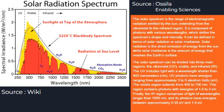The solar spectrum is the range of electromagnetic radiation emitted by the sun, extending from the ultraviolet to the infrared region. It is composed of photons with various wavelengths, which define the spectrum's shape and intensity. Solar radiation is the direct emission of energy from the sun, while solar irradiance is the amount of energy that reaches the Earth's surface. The solar spectrum can be divided into three main regions: the ultraviolet (UV), visible, and infrared (IR). The UV includes light with a wavelength shorter than 400 nanometers, and UV photons have energies ranging from approximately 3 to 5 electron volts (eV).